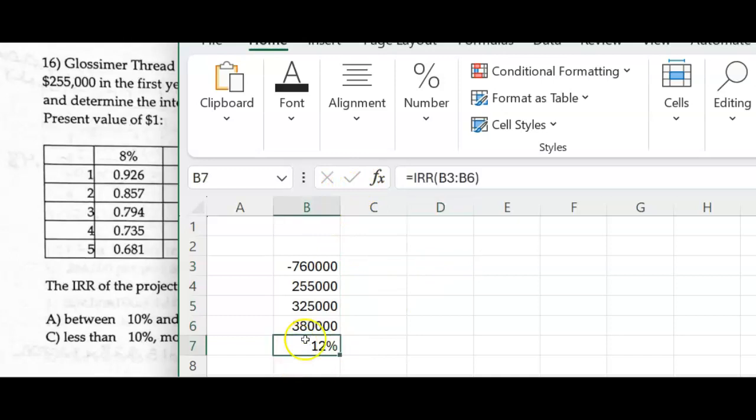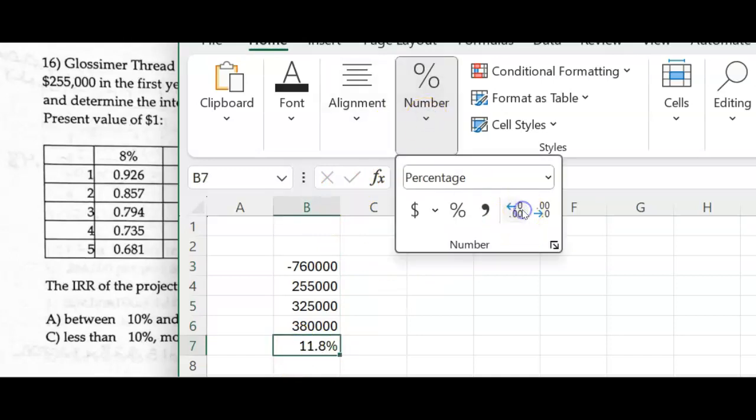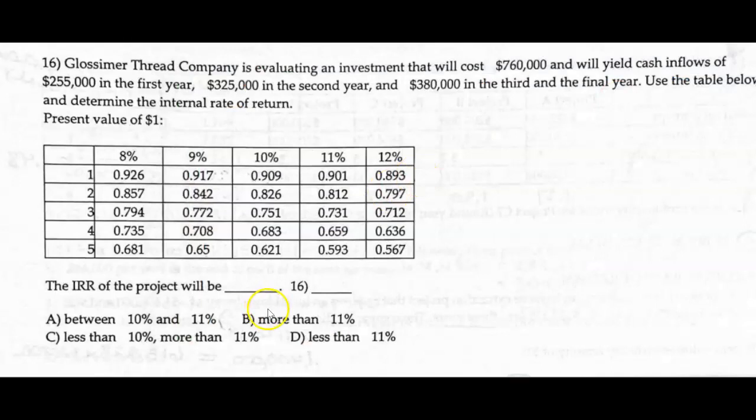So this says 12%, but what we've got to do is open up those decimals and see what it really is. So it's 11.8 is the number. So if we go back to the problem, it's 11.8, more than 11% is what it is.